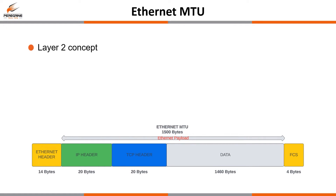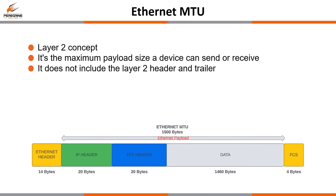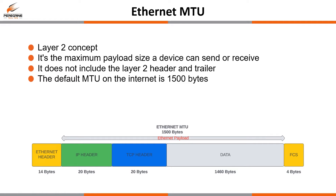The Ethernet MTU is at layer 2 and it's the maximum Ethernet payload size a device can send or receive on a layer 2 or layer 3 interface. It does not include the layer 2 header and trailer. The Ethernet MTU consists of the IP header, TCP header, and the IP data, but Ethernet can contain many different protocols — not necessarily TCP or IP; it could be UDP or FCoE for example. The default MTU on devices and on the internet is 1500 bytes, and most of the time you would never need to change this value.